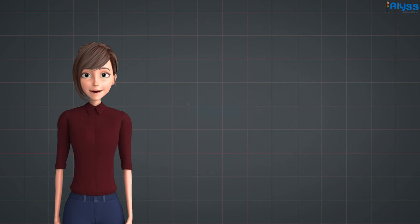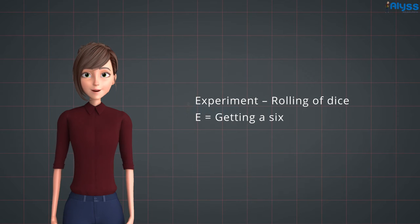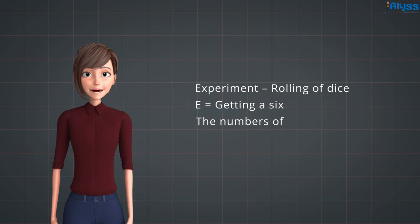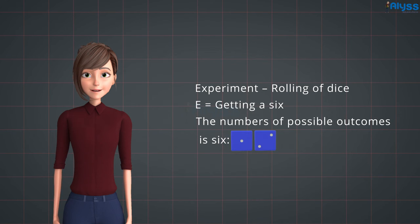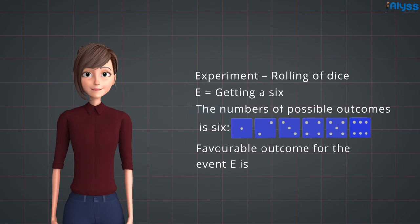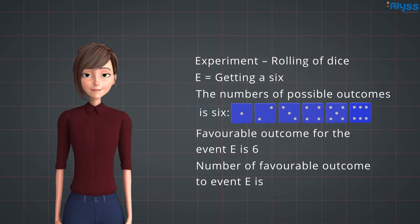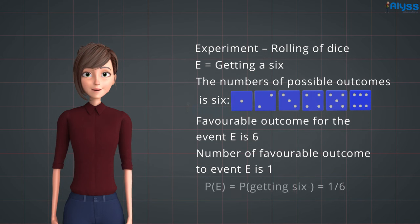Let us take an experiment to understand probability of an event. In a roll of a dice experiment, let the event E be getting a 6. The number of possible outcomes are 6: 1, 2, 3, 4, 5, 6. The favorable outcome for the event E is 6. Hence, the number of favorable outcomes to event E is 1. So, the probability of getting 6 is 1 upon 6.